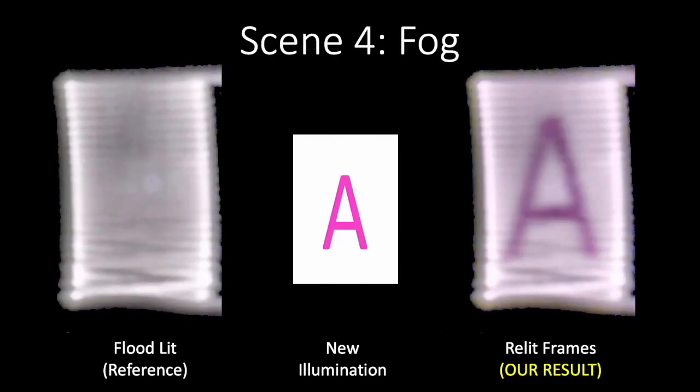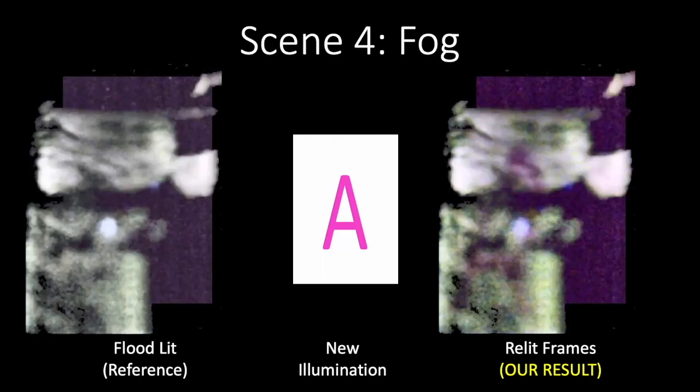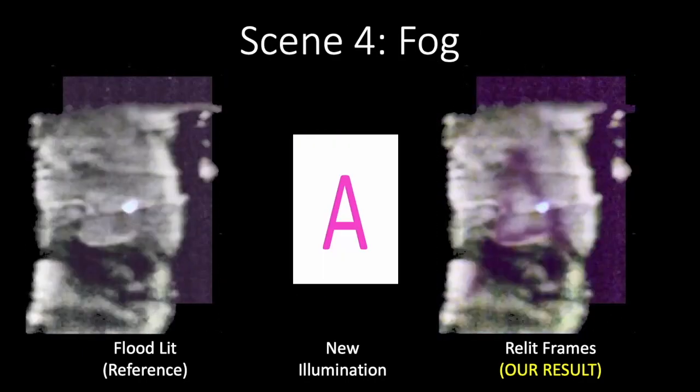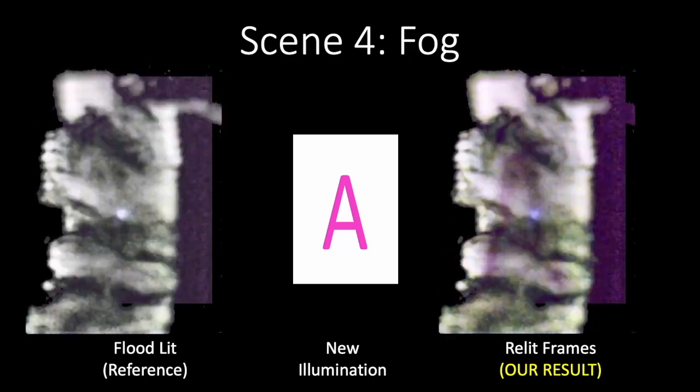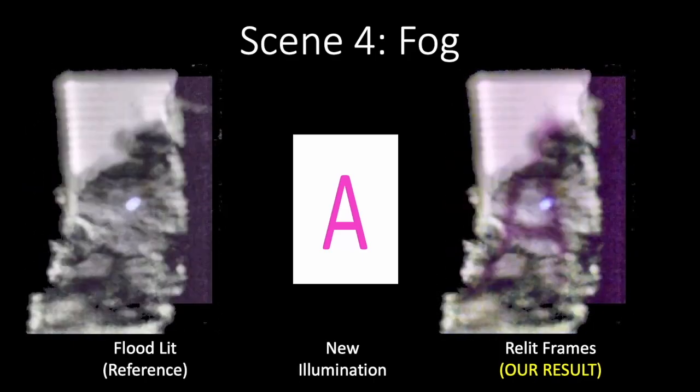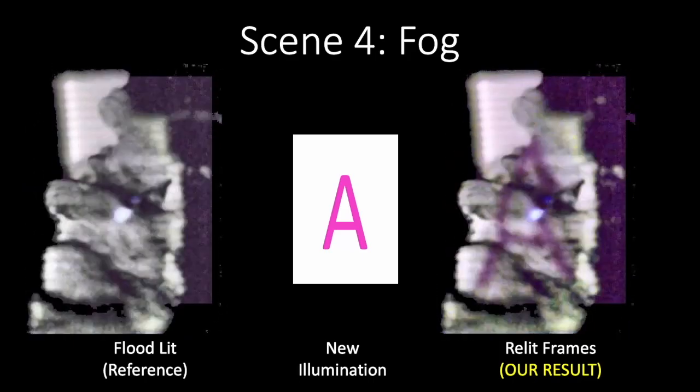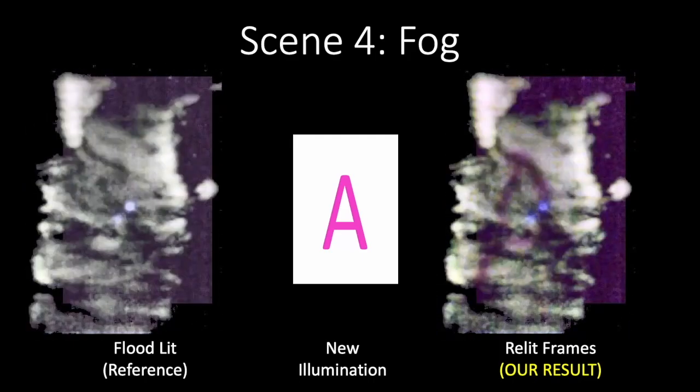Now we show a scene where fog, created with dry ice, is imaged by our system. We render a letter A onto the fog. Note the global effects and the warping of the A created by the scattering effects of the fog.